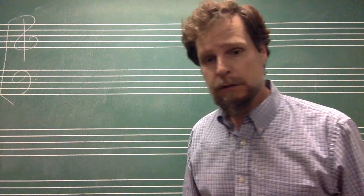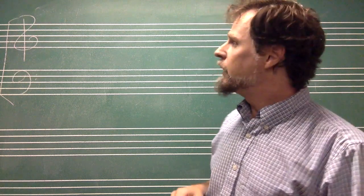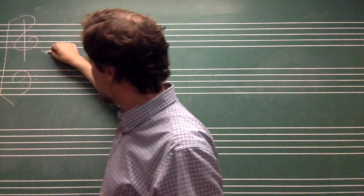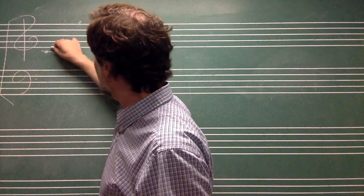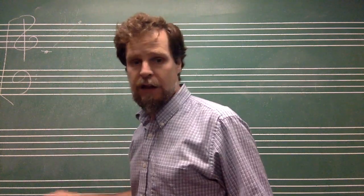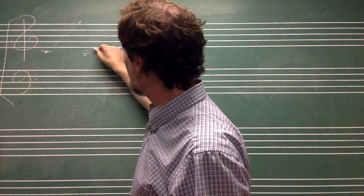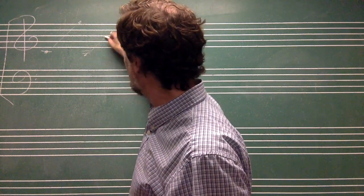The soprano part is going to go from about middle C up to somewhere at the top of the staff, and the alto part will go from the G below middle C up to the C above it. They'll be written in the treble staff.